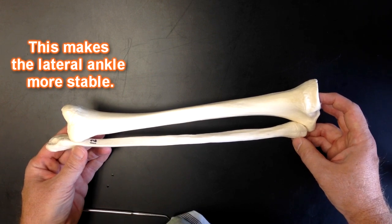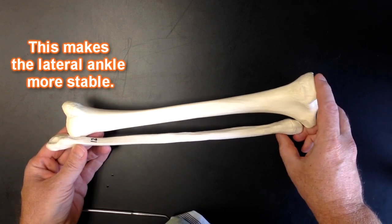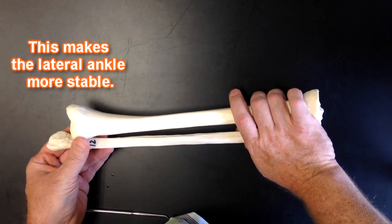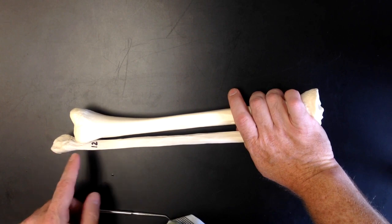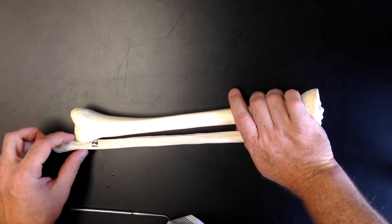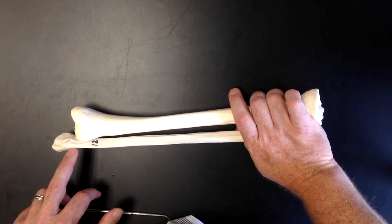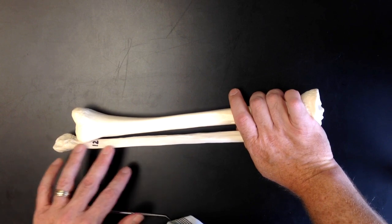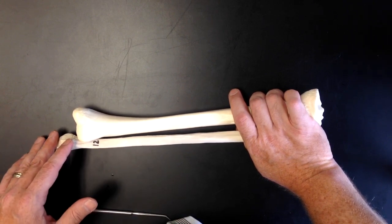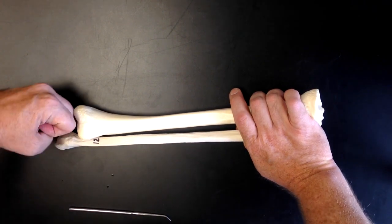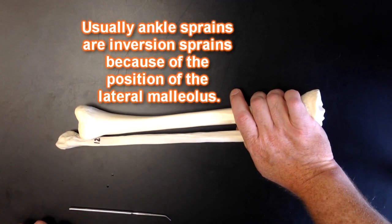This means that oftentimes when people sprain their ankles, they do it where the foot turns inward like this, and the reason for that is because of how far down this lateral malleolus goes, how far down the fibula goes, because it offers more support on this side. So when you roll your ankle, it usually rolls inward like this, an inversion ankle sprain.